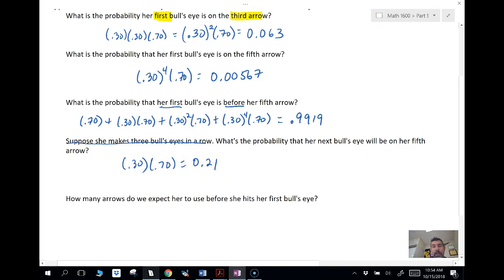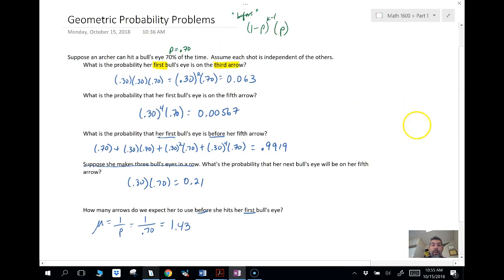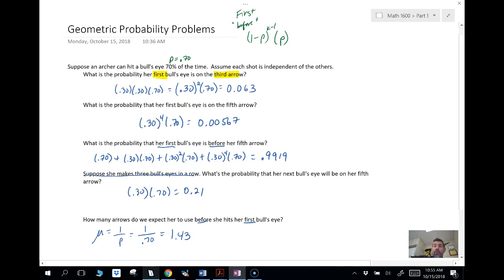So not as bad. How many arrows do we expect her to use before she makes her first bullseye? So we're wanting to know what is the average number that she's going to have to shoot until she makes her first one. So that is a geometric, and the mean for a geometric is 1 over p. So we're going to do 1 over 0.7, the probability of success, and we're going to get 1.43.